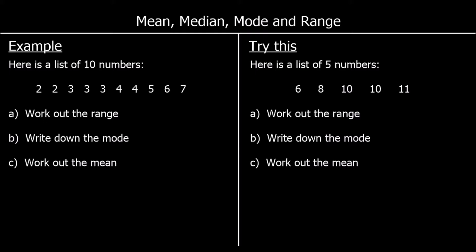Let's look at the first example. We have a list of ten numbers and the first question is asking us for the range. To find the range we take the biggest number — for these ten numbers that's seven — and we take away the smallest number, which is two. So the range is seven take away two, which is five.